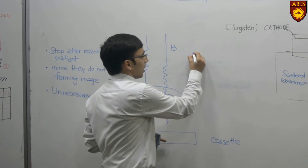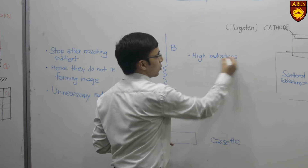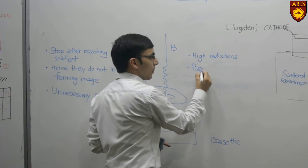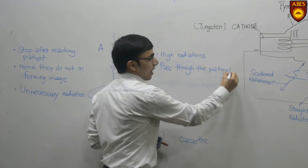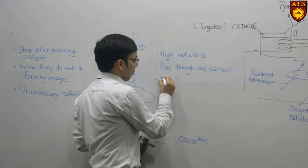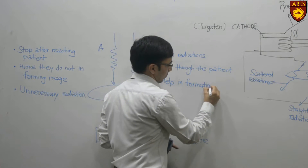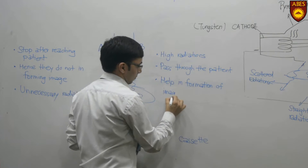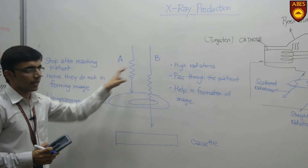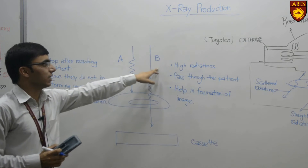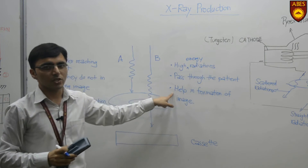Type B radiations are high energy radiations and help in the formation of the image. They pass through the patient and help in formation of the image.